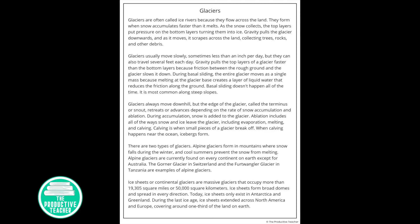Glaciers always move downhill, but the edge of the glacier, called the terminus or snout, retreats or advances depending on the rate of snow accumulation and ablation. During accumulation, snow is added to the glacier. Ablation includes all of the ways snow and ice leave the glacier, including evaporation, melting, and calving. Calving is when small pieces of a glacier break off. When calving happens near the ocean, icebergs form.